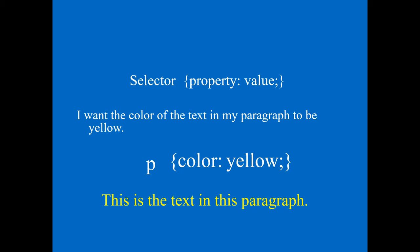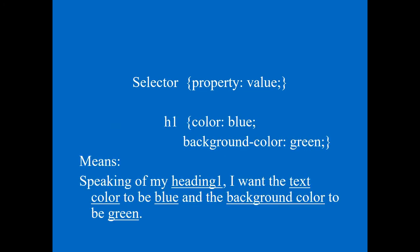Color means font color and background-color means the background color of the text. You can add multiple properties under a single selector. For example, for h1: color: blue; and background-color: green; You can write the color name or a hexadecimal value. In this way you can add any number of properties under one selector.